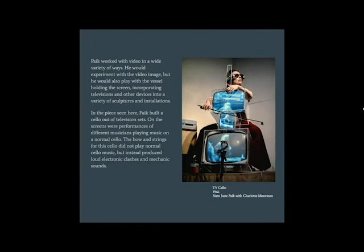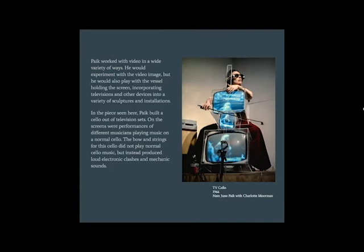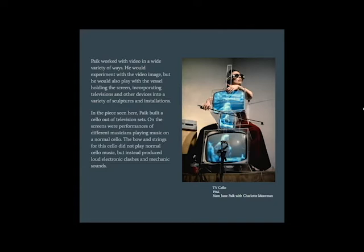Paik worked with video in a wide variety of ways. He would experiment with the video image, but he would also play with the vessel holding the screen, incorporating televisions and other devices into a variety of sculptures and installations. In this piece, Paik built a cello out of television sets. On the screens were performances of different musicians playing music on a normal cello, but the bow and strings produced loud electronic clashes and mechanic sounds instead.